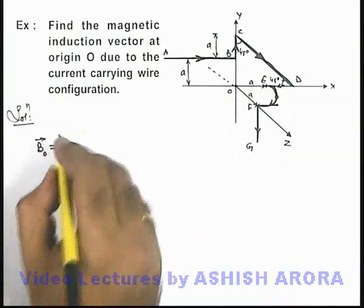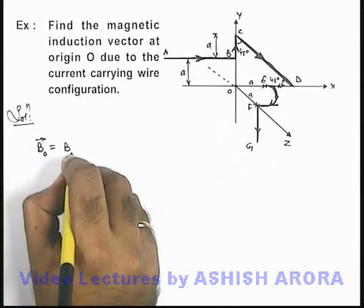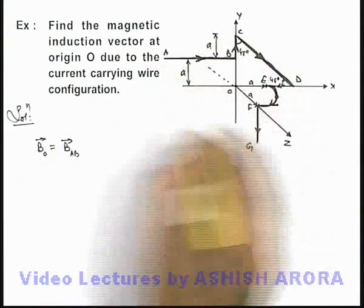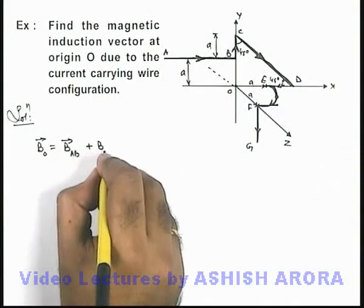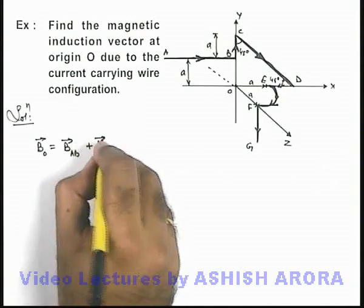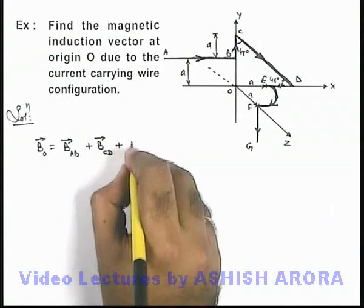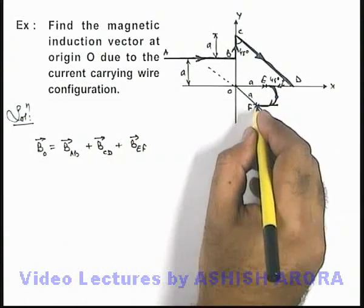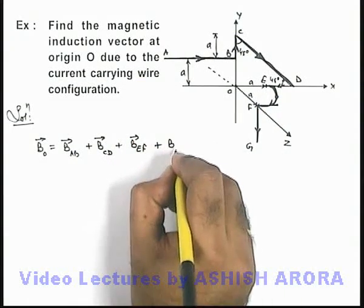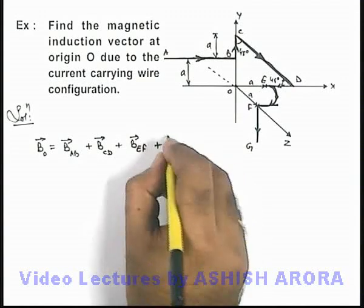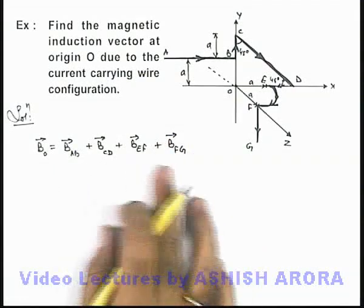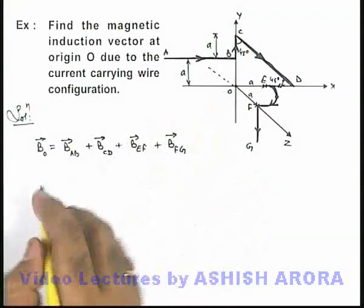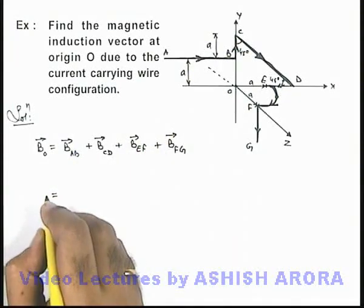So the magnetic induction at O can be written as: the magnetic induction due to wire segment A-B, plus due to wire segment C-D, plus due to wire segment E-F which is a quarter circular arc, and then due to wire segment F-G. There will be in total 4 terms, whose vector sum gives the total magnetic induction at point O.